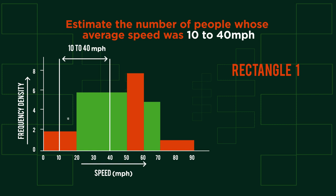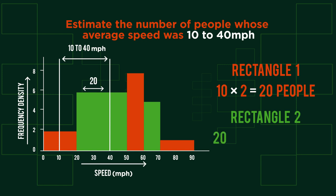Rectangle 1 has a width of 10, between 10 seconds and 20 seconds, a frequency density of 2, so 20 people in total. Rectangle 2 has a width of 20, from 20 to 40, and a frequency density of 6, so 120 people in total. There are therefore as an estimate 140 people whose average speed was in the range of 10 to 40 miles per hour.